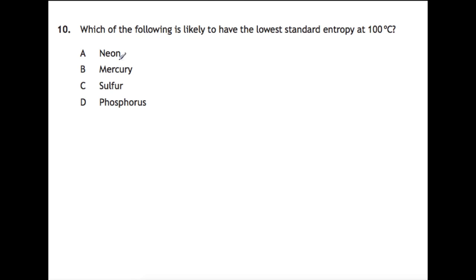For neon, you know at room temperature neon would be a gas, so it's unlikely that this is going to have a low entropy. Mercury is still a liquid at 100 degrees—its boiling point is 357. Sulfur is a solid—its melting point is 115 and you can find that in the data book. Phosphorus is a liquid—it has a melting point of 44 degrees and a boiling point of 280. So the lowest entropy is going to be sulfur because it is still a solid.